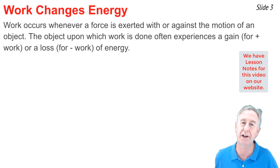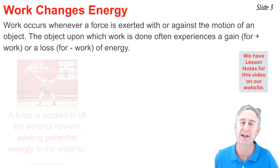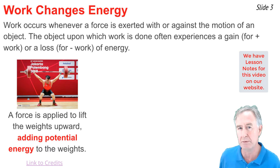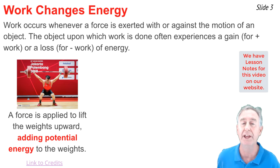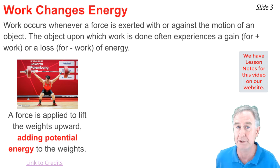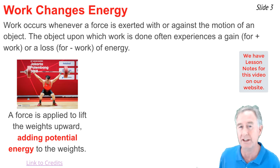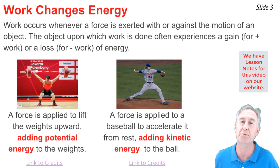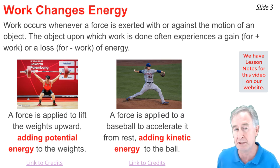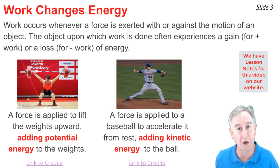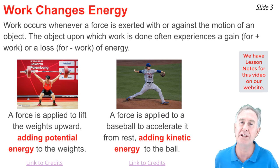Here are two examples of work being done on an object to change its energy. In the first example, a force is applied by a weightlifter to a barbell in order to lift it up above the weightlifter's head. That force does positive work and increases the gravitational potential energy of the object. In the second example, a force is applied by a pitcher on a baseball to accelerate it from rest to a high speed, increasing the kinetic energy possessed by the baseball.